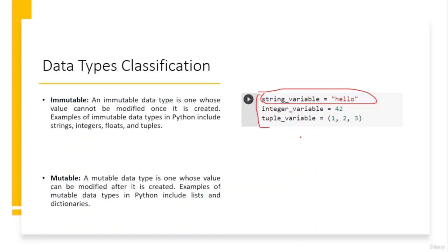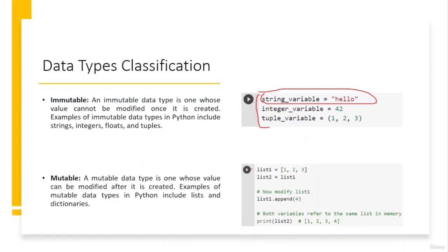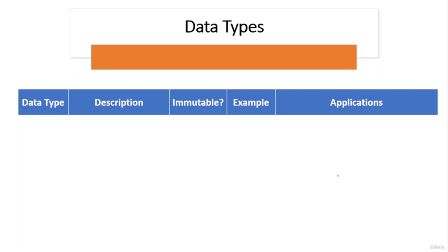For immutable types, you cannot change the value once created — for instance, you cannot change a string variable without creating a new string. For mutable types like lists and dictionaries, you can append new items or add key-value pairs after creation. An important thing to note: when you assign a mutable object to a new variable, both variables refer to the same object in memory, so modifying it through one variable will be visible through the other.